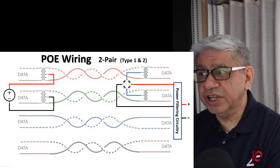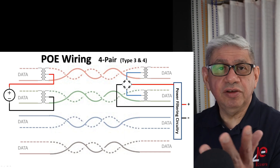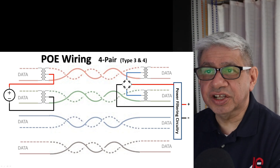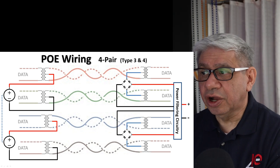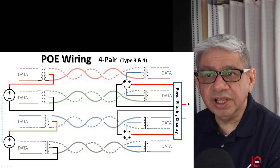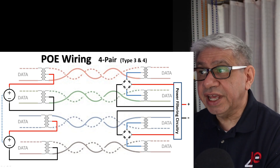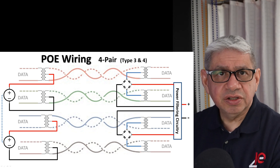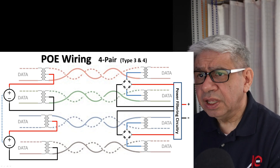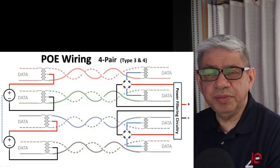For the four-pair version — Types 3 and 4 — you still have everything from the two-pair configuration, but you replicate the same logic and circuitry on the remaining two pairs at both source and destination. Both pairs can go through the same filtering device at the receiving end, which just needs to be scaled up slightly. This was designed for backward compatibility, so you can actually use the four-pair version even if you only have a two-pair setup at the other end.